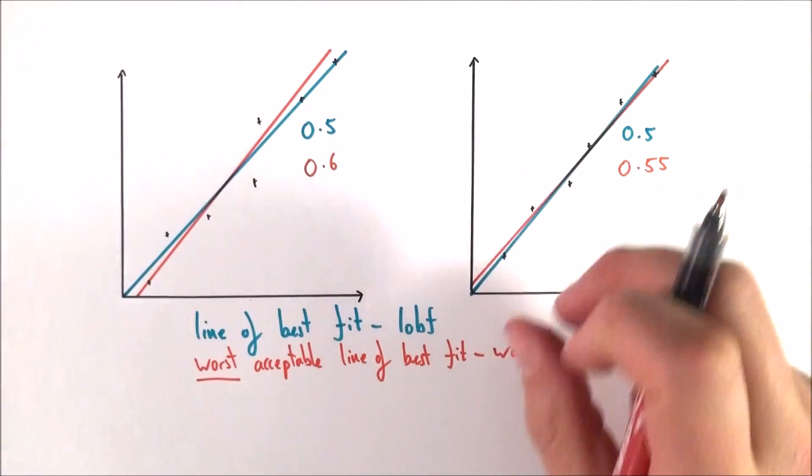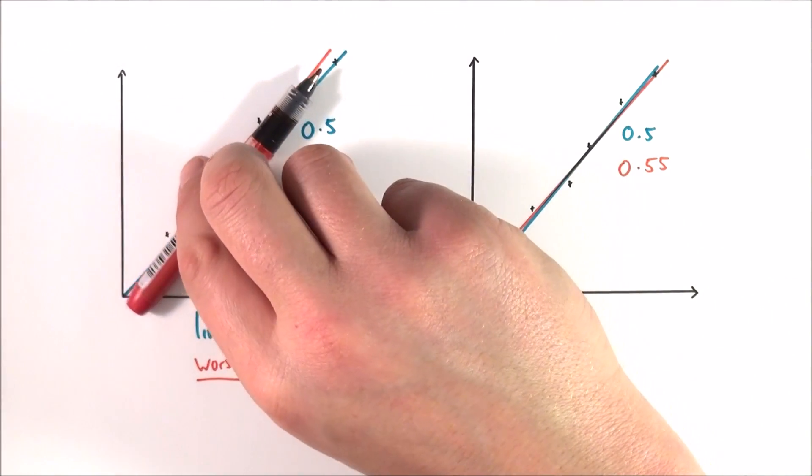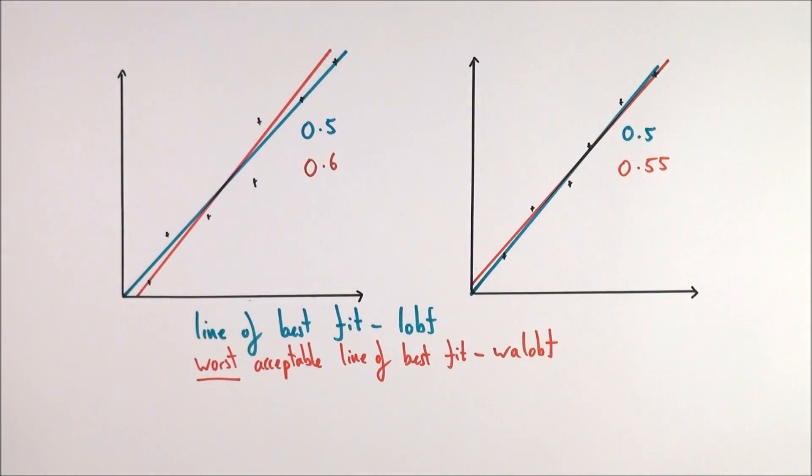So what we can do now is we can actually start to quantify the amount of uncertainty in the data. Effectively, the bigger the difference between these two gradients, the more uncertain we are about the actual value here. And this is where we use the equation for the percentage uncertainty in the gradient.